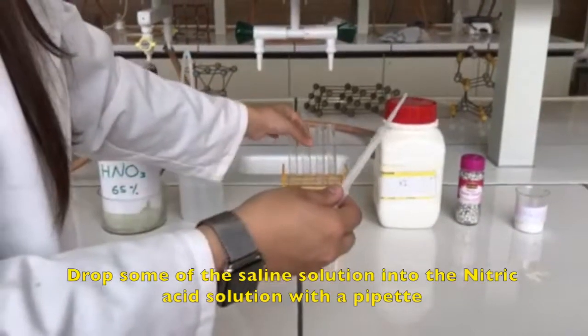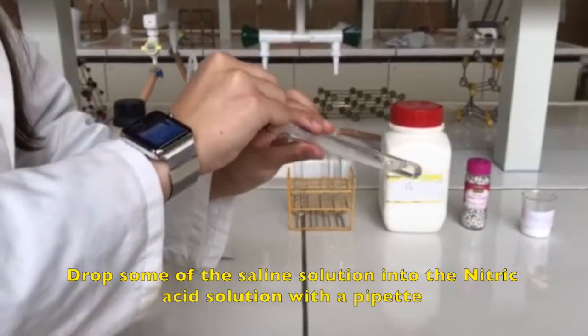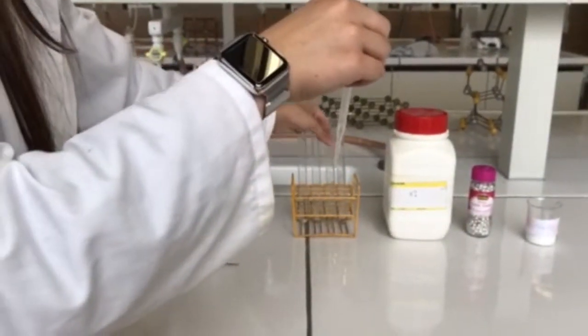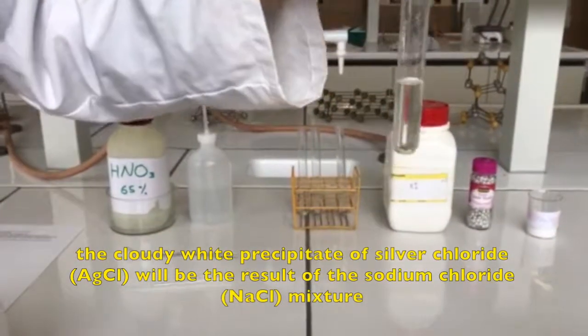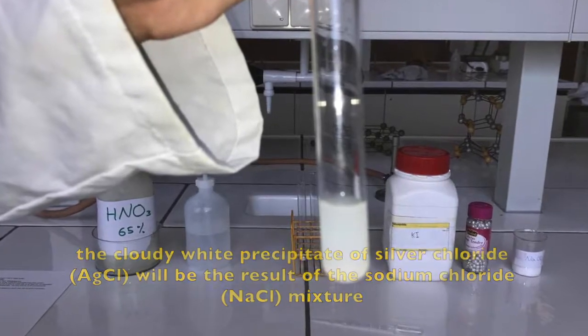Drop some of the saline solution into the nitric acid solution with a pipette. The cloudy white precipitate of silver chloride will be the result of the sodium chloride mixture.